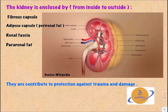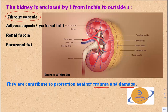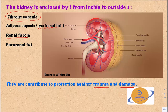The kidneys are enclosed by various layers of protective tissues that protect against trauma and damage. From inside to outside: the first layer is the fibrous capsule, which encloses the entire kidney. Then we have the perirenal fat or perinephric fat, followed by the renal fascia, and finally the pararenal fat on the outside.